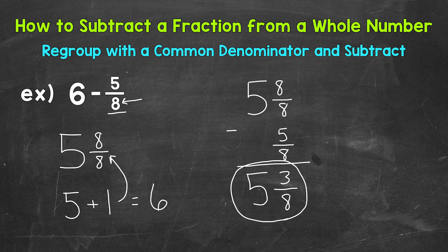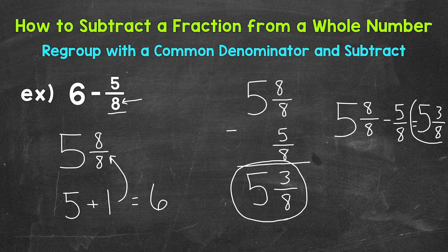Now, one more thing I do want to mention, you can write this horizontally, meaning side to side, if you prefer that way. So 5 and 8 eighths minus 5 eighths. And that gives us, subtract the fractions, we get the same thing. 3 eighths for our fractions, and then we have 5 wholes. So 5 and 3 eighths horizontally as well.